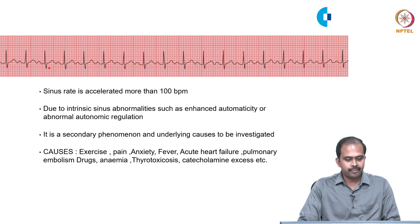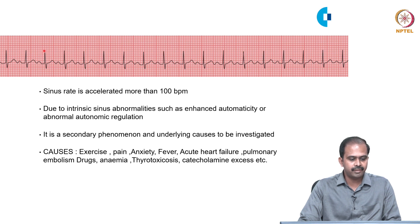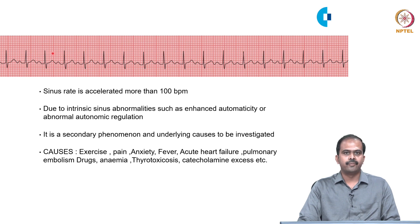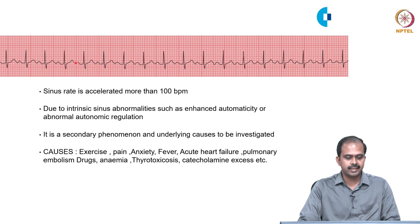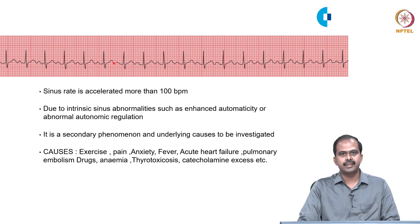In this ECG, let us calculate the rate. Between two R waves there are approximately 10 small boxes; using 1500 divided by 10 equals 150. The rate is more than 100, so it is tachycardia. A P wave precedes each QRS complex followed by a T wave, confirming sinus origin. This is an example of sinus tachycardia.